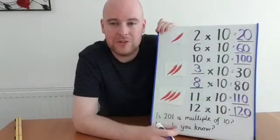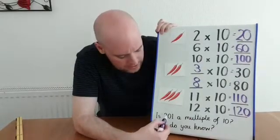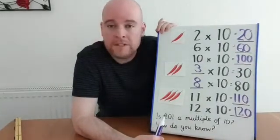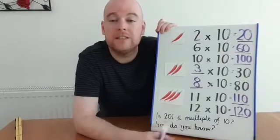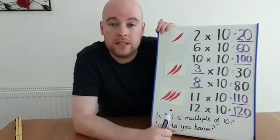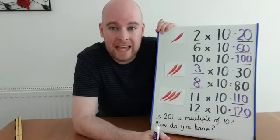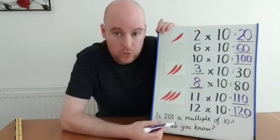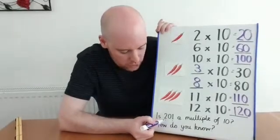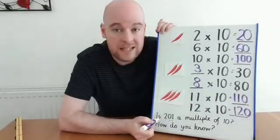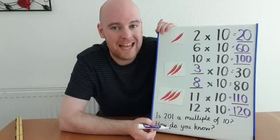Well done if you got those — those weren't easy. And I wonder whether you had a think about this one: is 201 a multiple of 10? Well done if you said no. Because remember at the start, we noticed that all the multiples of 10 have 0 ones — they end in a 0. But 201 ends in a 1. It's got two hundreds, 0 tens, but it's got 1 one, which means it is not a multiple of 10.